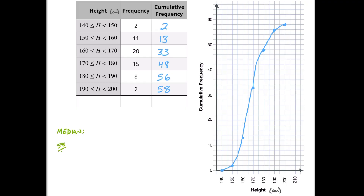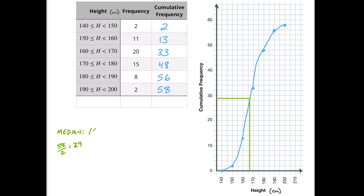So if we take 58 and divide it by two, that's going to be the 29th position. At the 29th position, as we go along the graph, the 29th person is going to be in between 160 and 170. We draw a line straight across and then straight down to find our best value. Looking at 160, 165, 170 — it's just a little bit after 165. Let's call it 166 centimeters. So there's our estimated median.